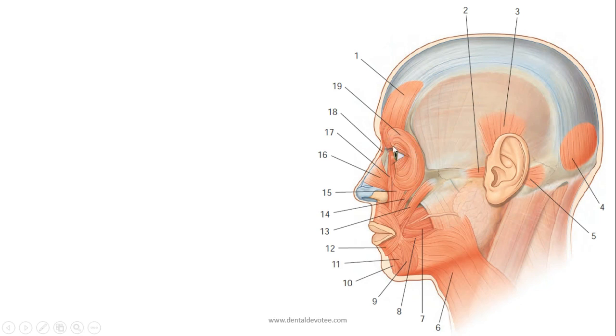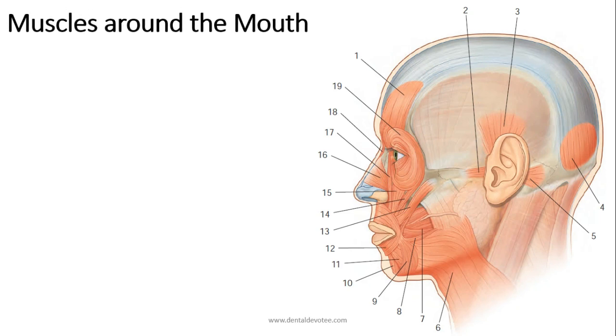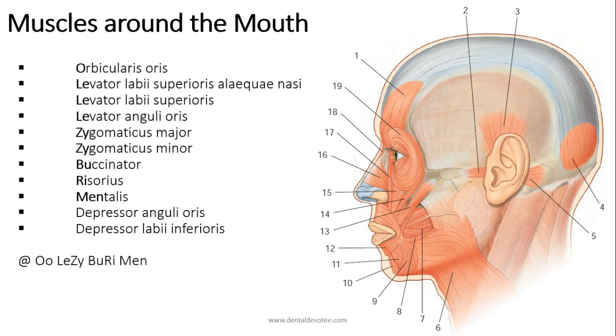Orbicularis oculi in the eye region and nasalis and procerus in the nose region. But in the mouth there are many muscles. Now let's see what are the muscles around the mouth and how to remember their names.